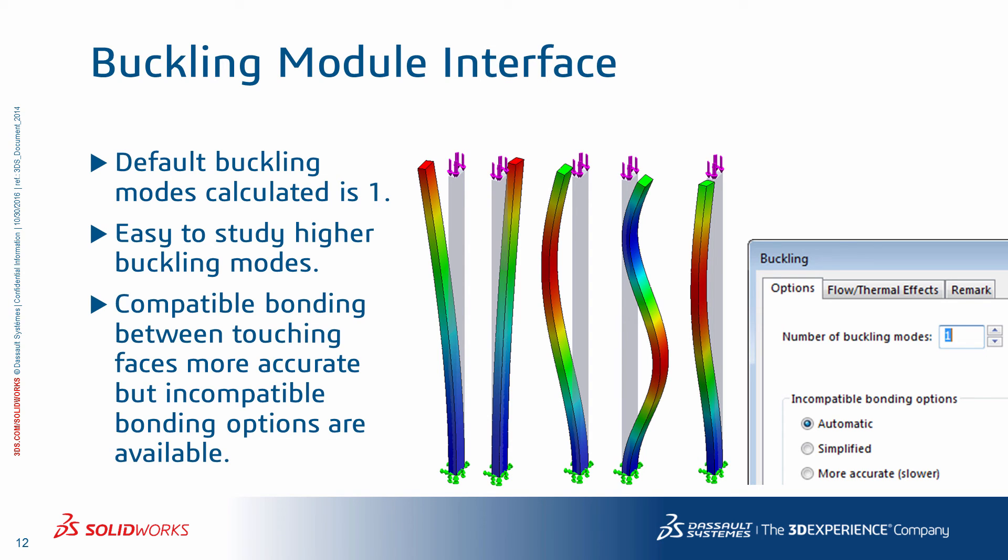In assemblies, surfaces touching each other are either free or bonded. For bonded surfaces, compatible bonding with common mesh nodes gives more accurate results, but incompatible bonding options are available as well, giving additional flexibility in meshing complicated geometries.